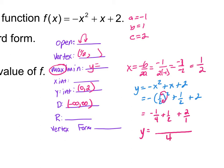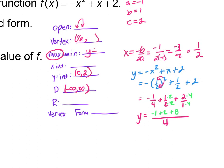When you square a fraction, the square goes to both numerator and denominator. So this becomes -1/4 + 1/2 + 2. Getting a common denominator of 4: -1/4 + 2/4 + 8/4. The negative sign is out in front of 1/4. So negative 1 plus 2 plus 8 over 4 gives us 9/4. My vertex is at (1/2, 9/4).